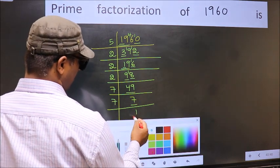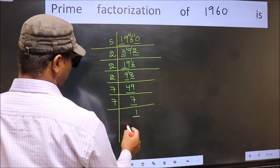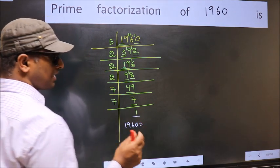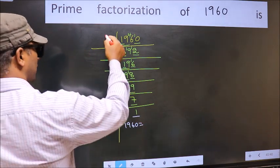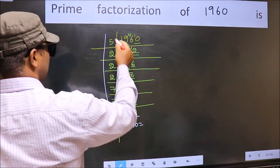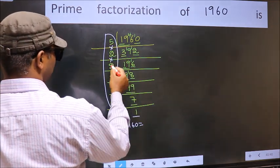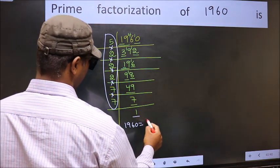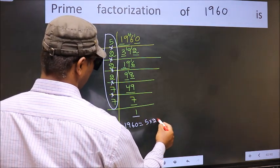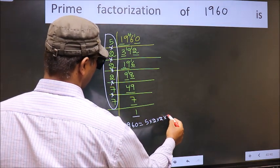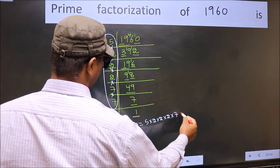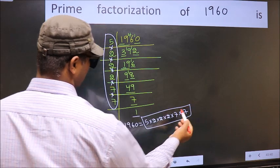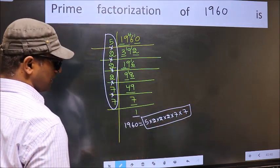So the prime factorization of 1960 is the product of these numbers: that is 5 × 2 × 2 × 2 × 2 × 7 × 7. This is the prime factorization of 1960.